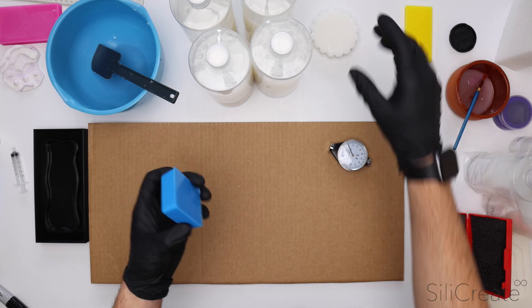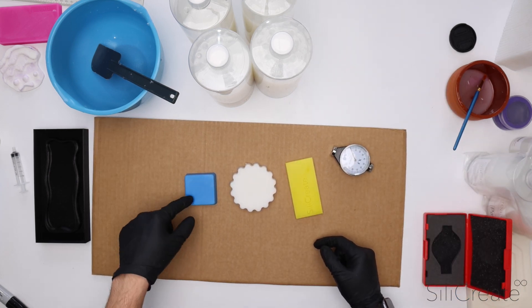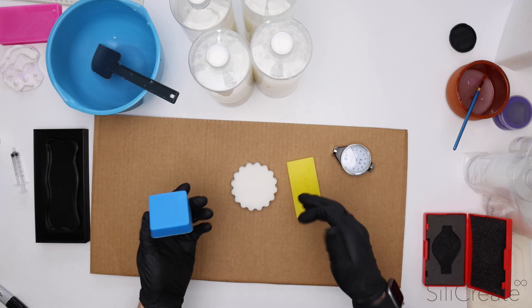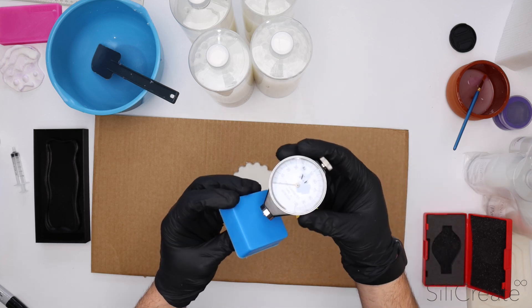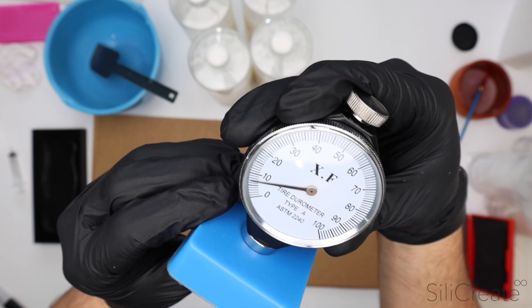So here's a few that I made earlier. The blue one was a mix of the 0A and our 15A with a bit of blue pigment. We were shooting for a shore hardness of around seven and a half, so it was a direct 50-50 mix of the 0A and the 15A. If you look at it now on the durometer, seven, seven and a half, so pretty close.